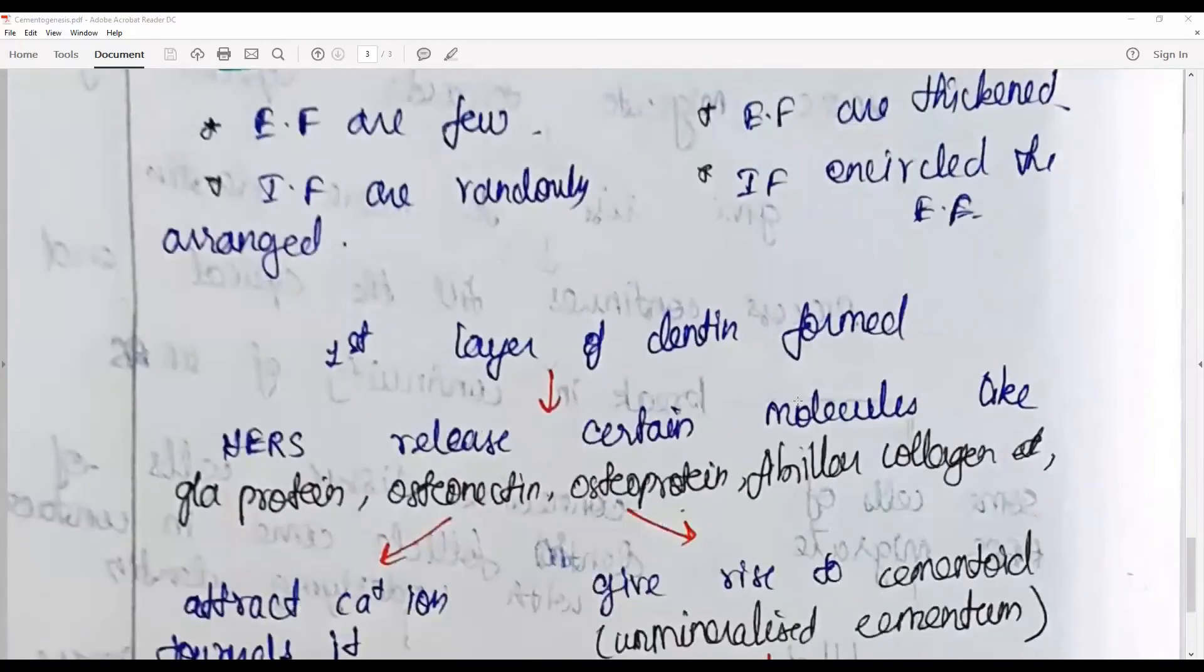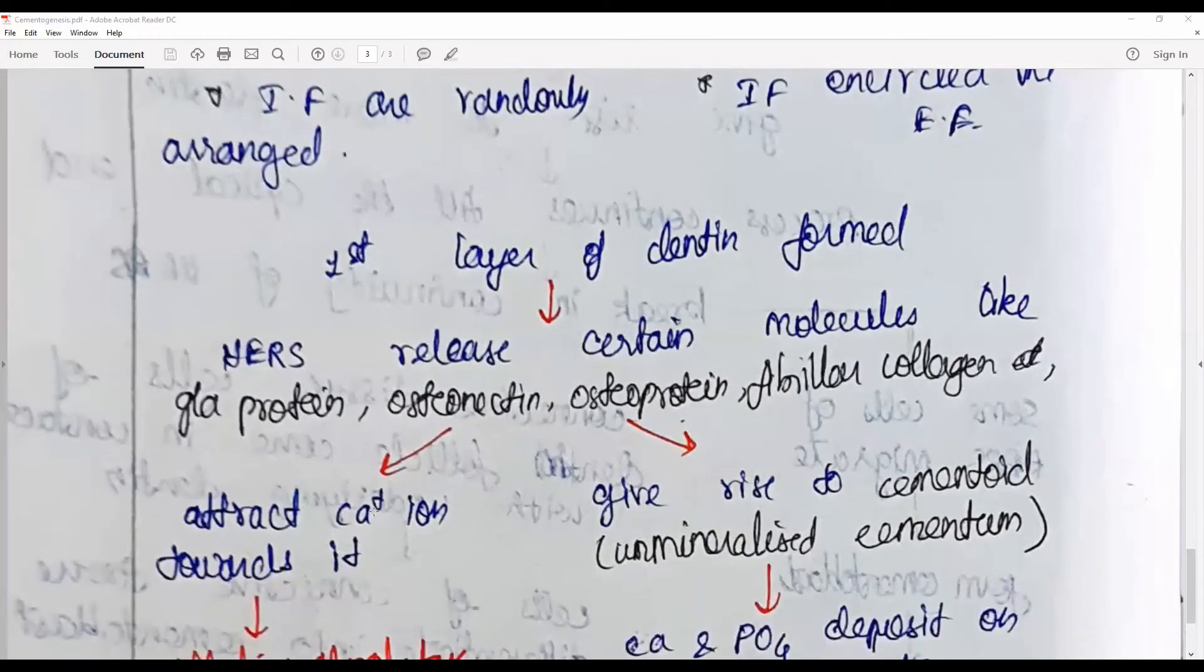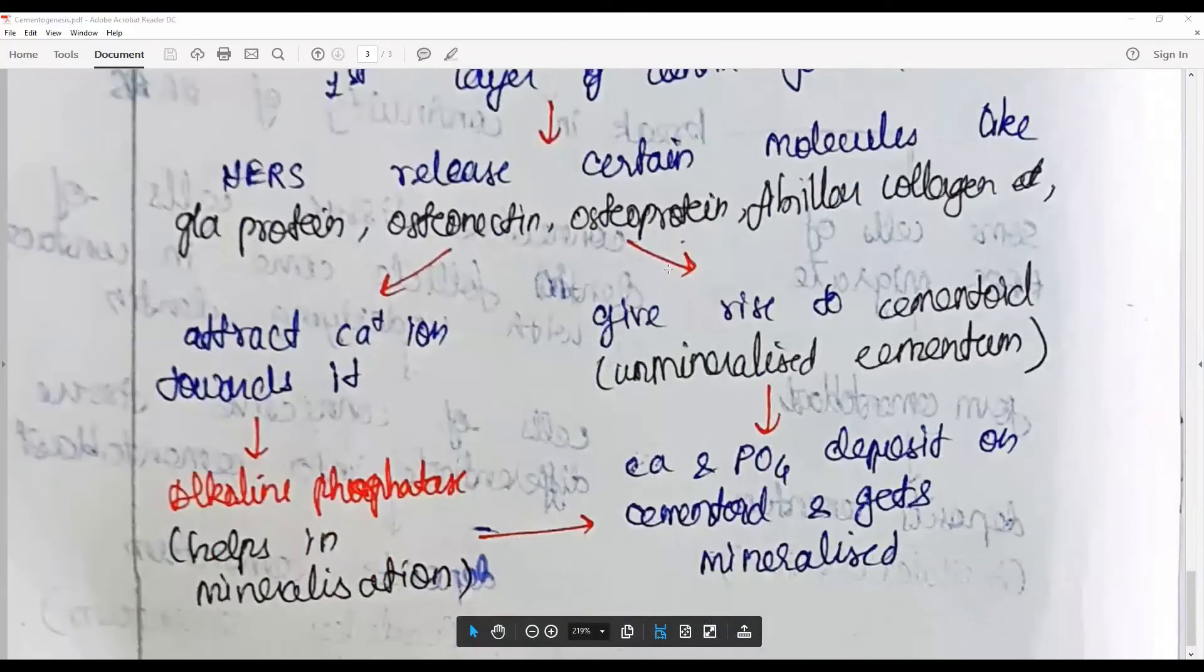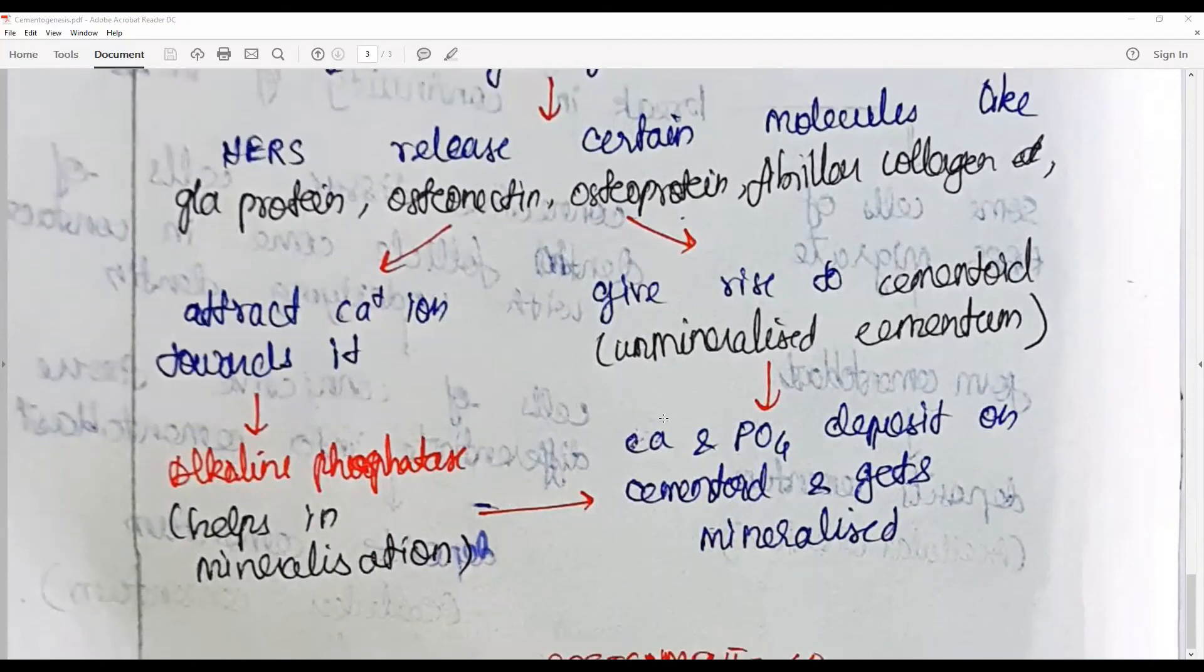When the first layer of dentin is formed, the HERS subsequently releases certain molecules like GLA proteins, osteonectin, osteoproteins, and collagens. Osteonectin is responsible for calcification, stimulates or works with alkaline phosphatase, and helps in mineralization. Osteoprotein gives rise to cementoid, or undermineralized cementum. They initiate and regulate the formation of cementoid materials. Together with alkaline phosphatase, calcium and phosphate deposition happens on the cementoid and gets mineralized.